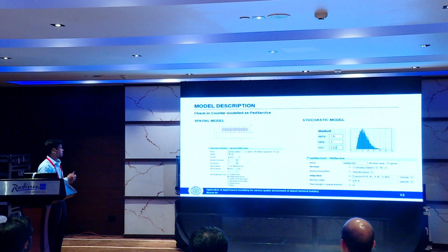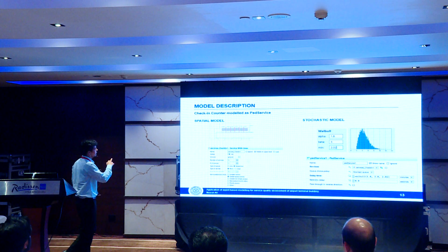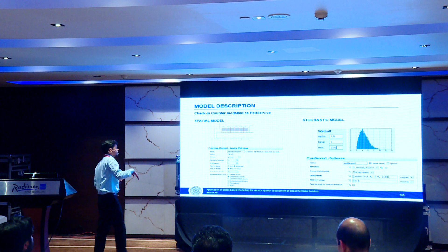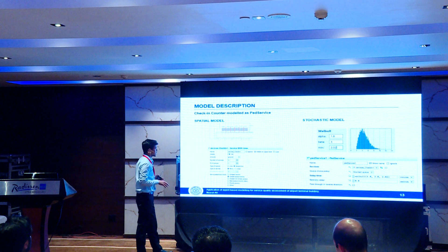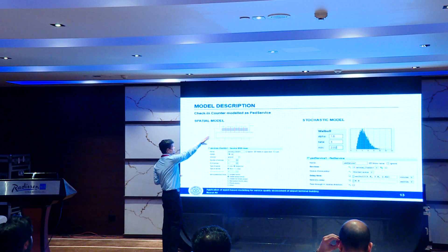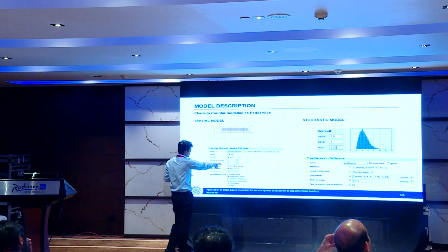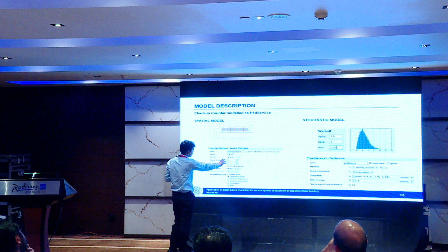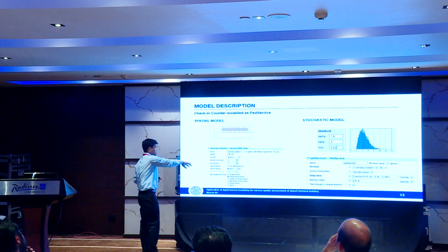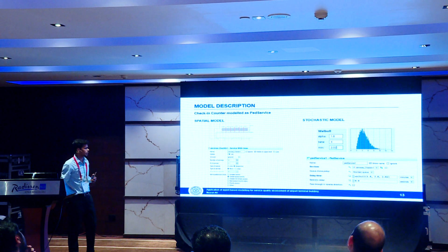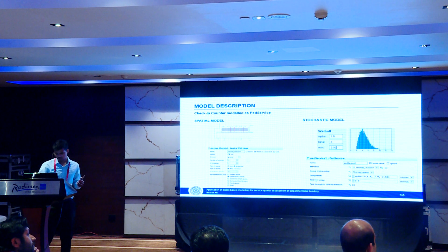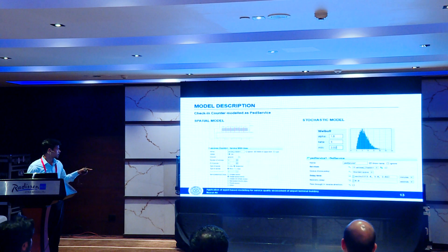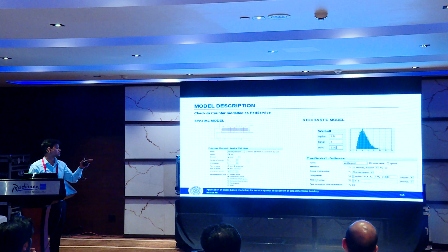This is the spatial modeling of the check-in zone. The blue color represents the serpentine queuing, and the green points represent the check-in counters. At any instant during the modeling, we can change the number of check-in counters. This spatial modeling is also linked with stochastic modeling.